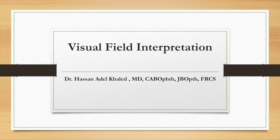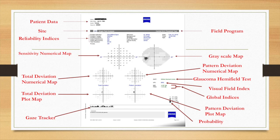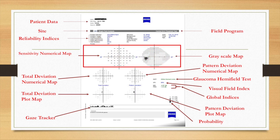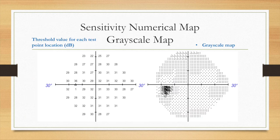Hello everybody. I'm going to continue my talk about visual field interpretation. As I said before, I'm focusing on the Humphrey visual field. I started my talk about the patient data and the data of the machine. Today I'm going to talk about the sensitivity, the threshold numerical map and the grayscale map, and also the total deviation numerical map and pattern deviation numerical map.